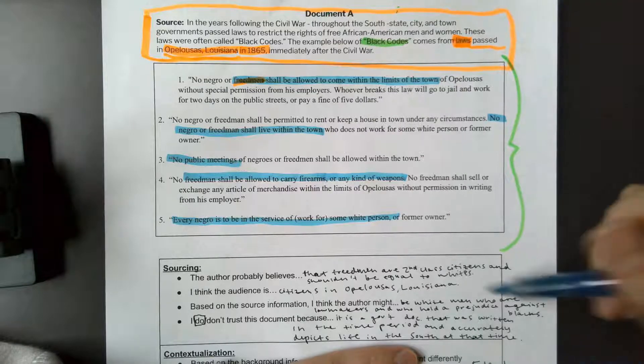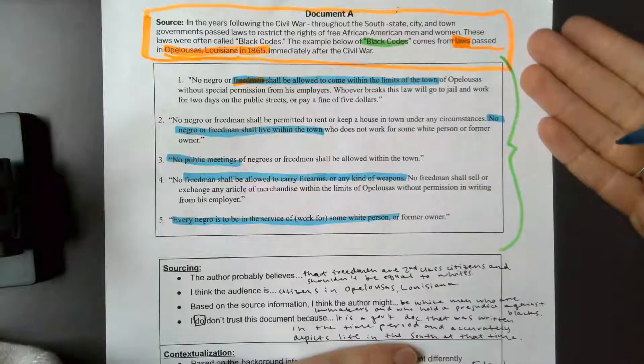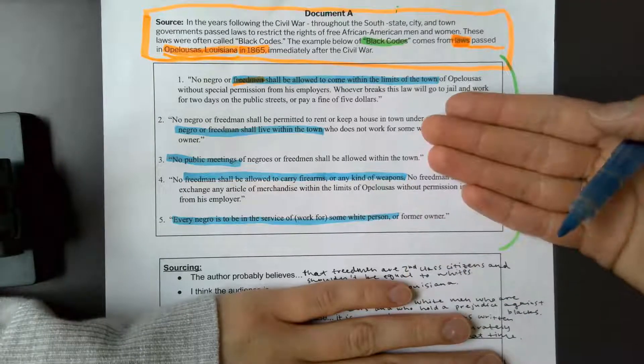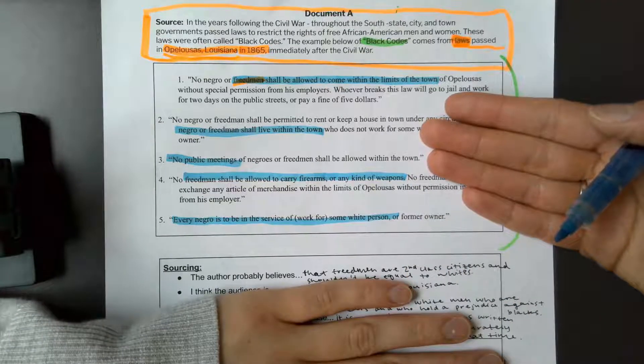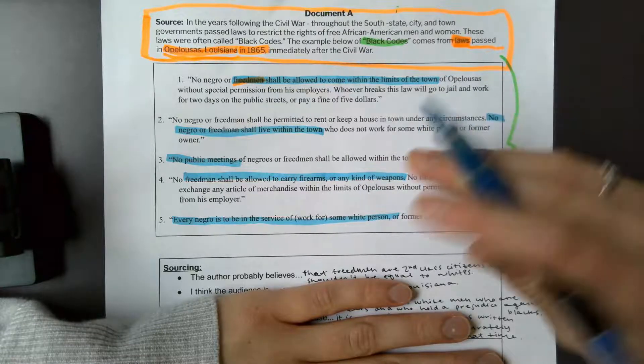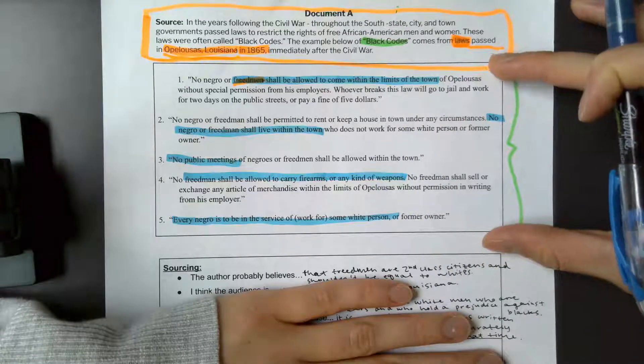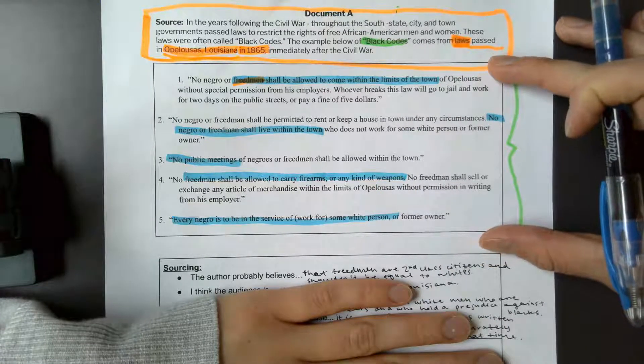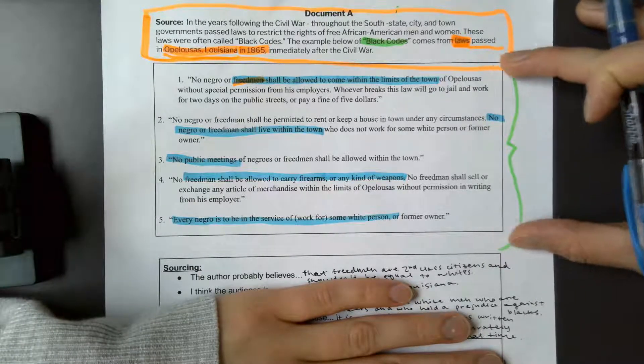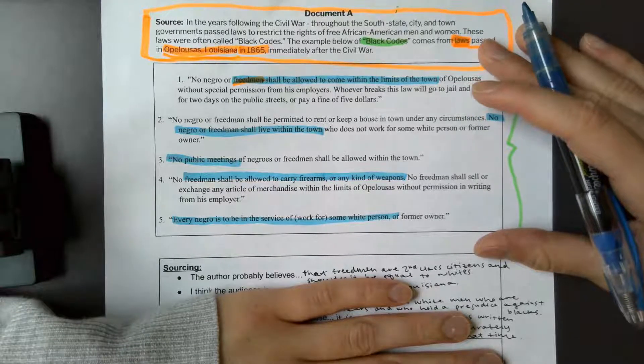So two, what evidence does the author use? This really is the evidence. So if we were looking at like a news article or something of that nature, then you would be able to pull evidence out. But as this is just a law that's in place, this is the evidence. This is like the primary source right here, so we can kind of skip that question.